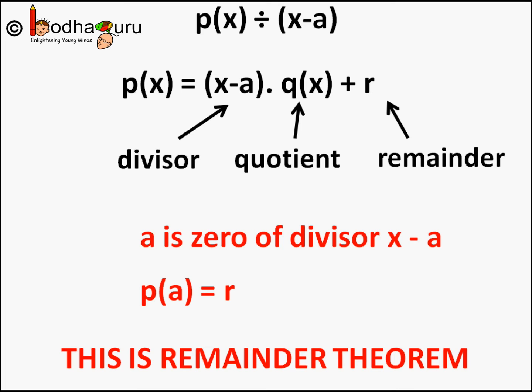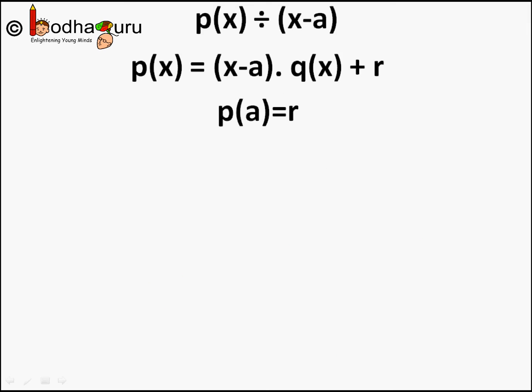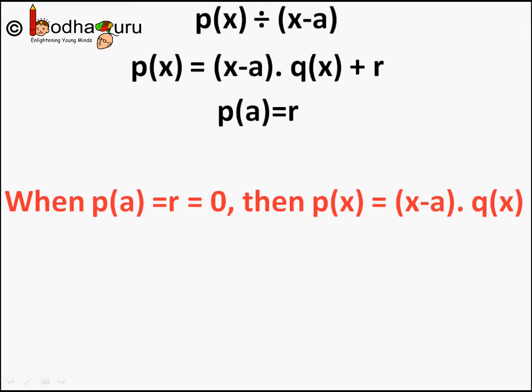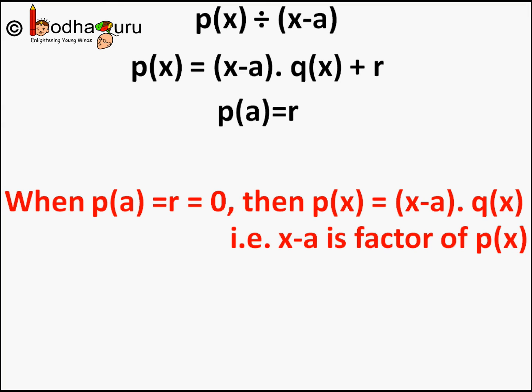Now let us say p(a) comes out to be 0 itself. This means the remainder r is equal to 0. This means p(x) = (x − a) · q(x), because r is 0. This means (x − a) is a perfect divisor of p(x), or in other words (x − a) is a factor of polynomial p(x), because (x − a) divides the polynomial completely with 0 remainder left.